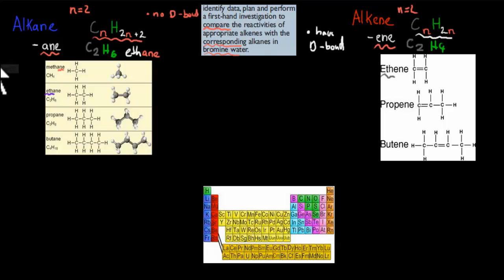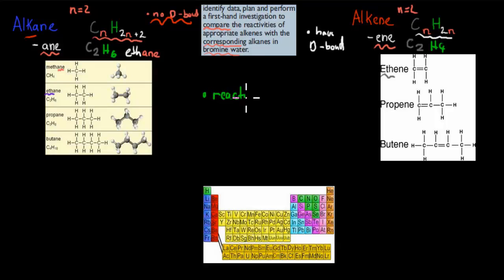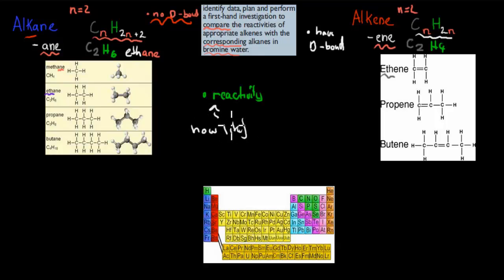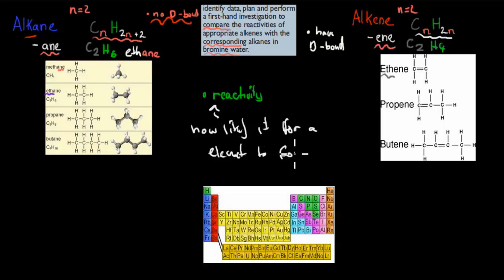So now we've figured out what alkanes and alkenes are and their major difference: one has no double bond — the alkanes — and the other has double bonds — the alkenes. But I want to talk about reactivity, because that's what this dot point is all about. Reactivity has to do with how likely it is for an element or compound to form new compounds — that's reactivity in a nutshell.